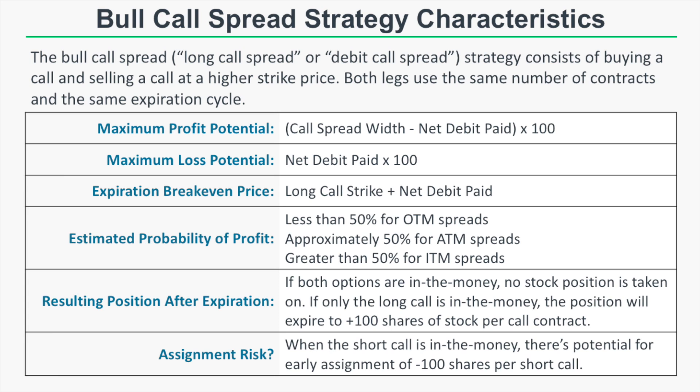The maximum profit potential of the bull call spread is the call spread width minus the debit you pay, times 100. So if you purchase a five-dollar-wide call spread and pay $2.50 for it, your maximum profit potential is $5 minus $2.50, times 100, which is $250. The maximum loss potential is the net debit paid times 100. So if you pay $2.00 for a call spread and it expires out of the money, your maximum loss will be $2.00 times 100, which is $200.